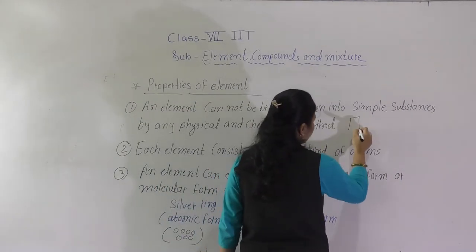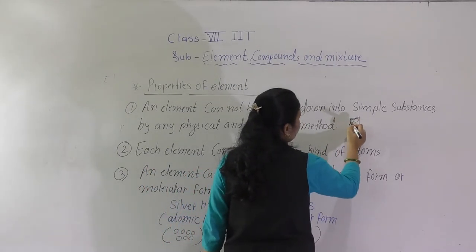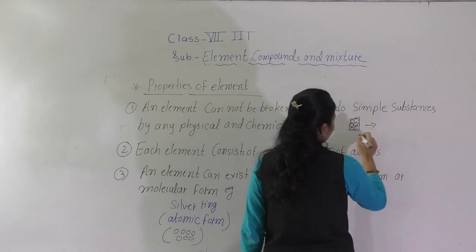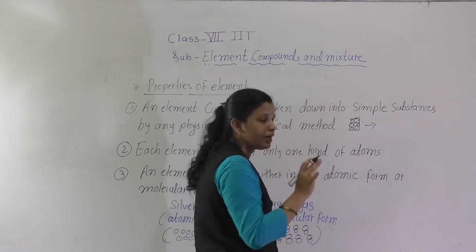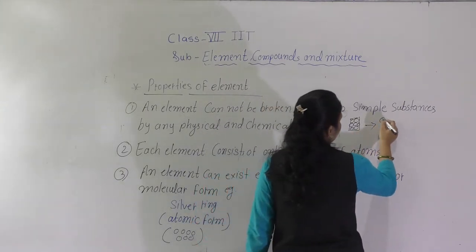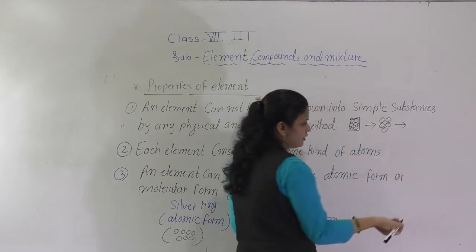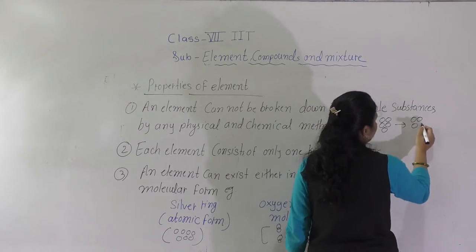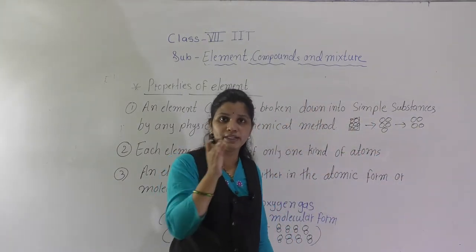Suppose this is one piece of gold and it contains so many atoms. If you try to break it down — say 7 atoms are there — you will get 5 atoms of gold only.